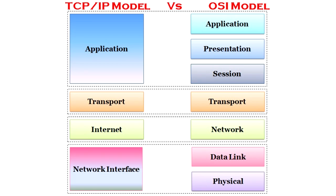When we talk about the OSI model layers, we have HTTPS protocol operating across multiple layers. This is the application layer, presentation layer, and session layer. When we talk about the TCP/IP stack, we have the HTTPS protocol at the application layer.